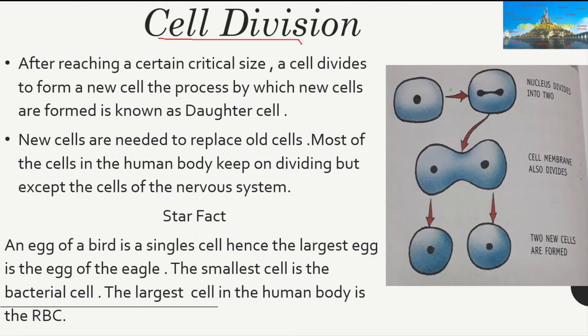Now let's move to cell division. After reaching a critical size, a cell cannot grow more, so it divides itself into two new cells — this process is known as cell division. The new cells thus formed are known as daughter cells, and the cell from which they were formed is known as the mother cell.